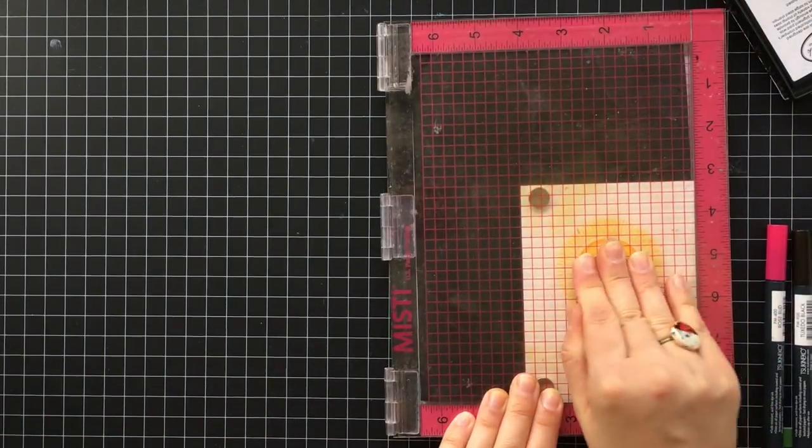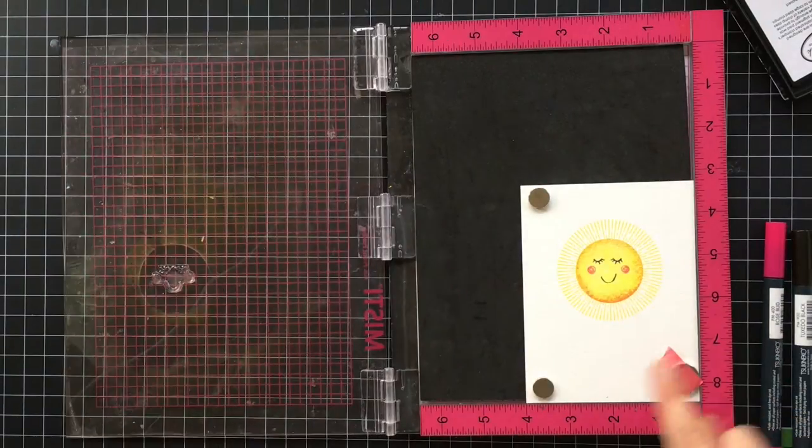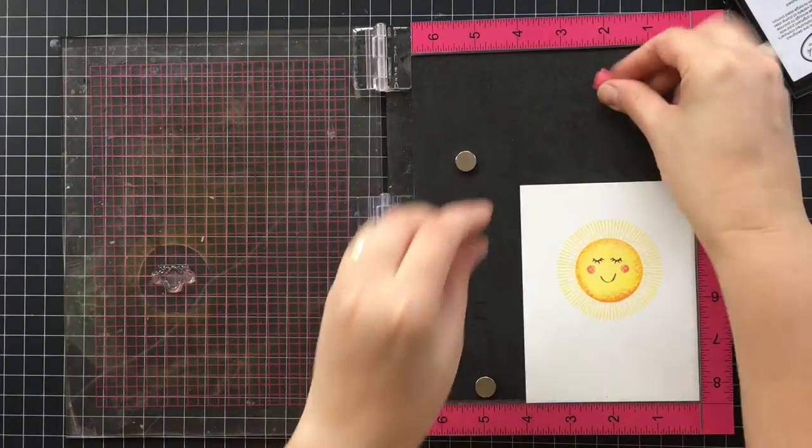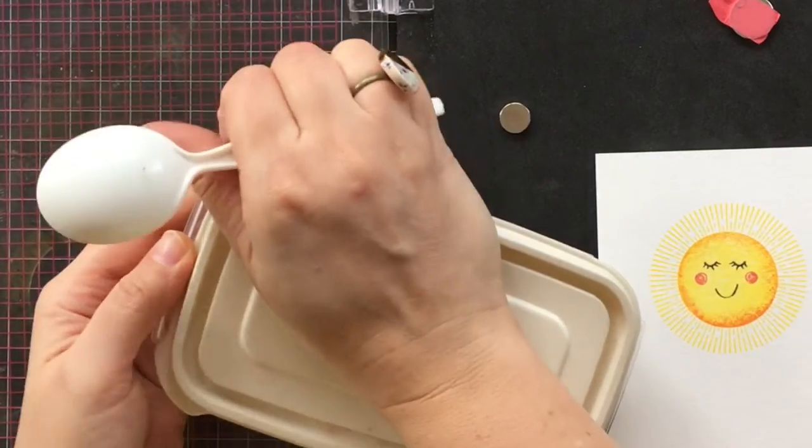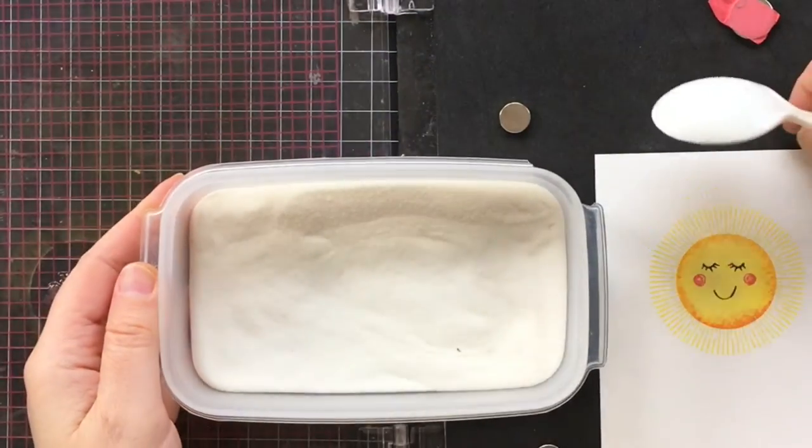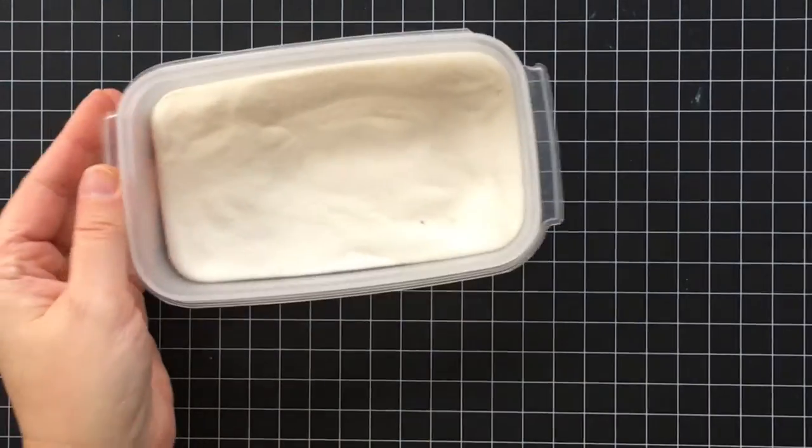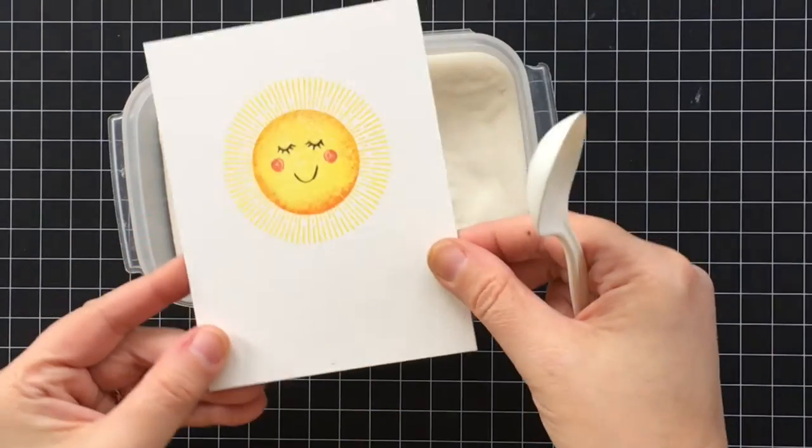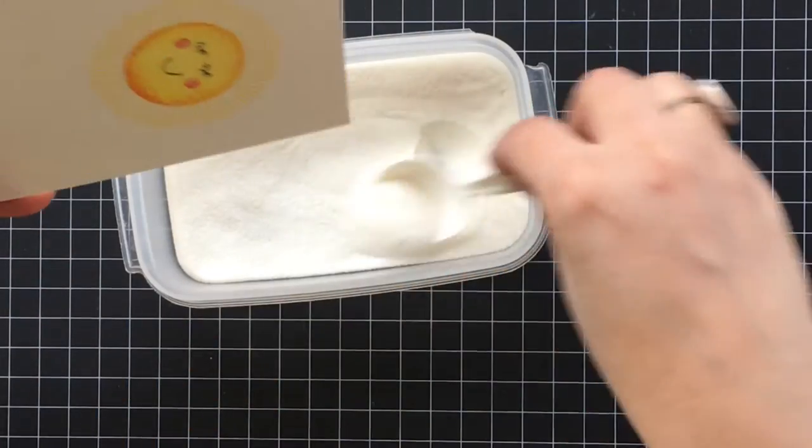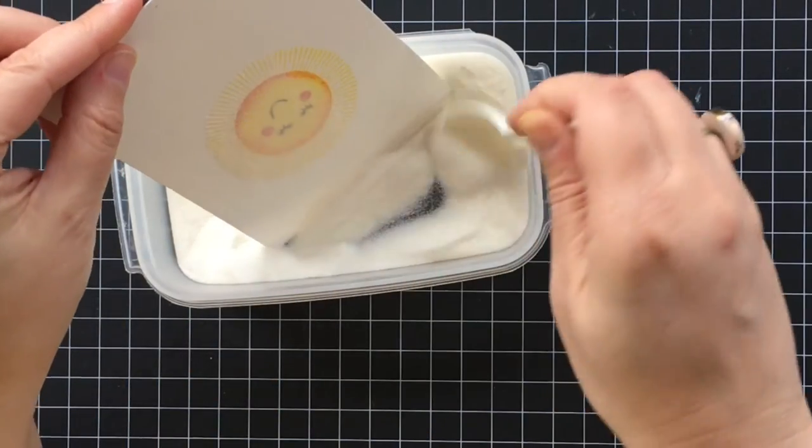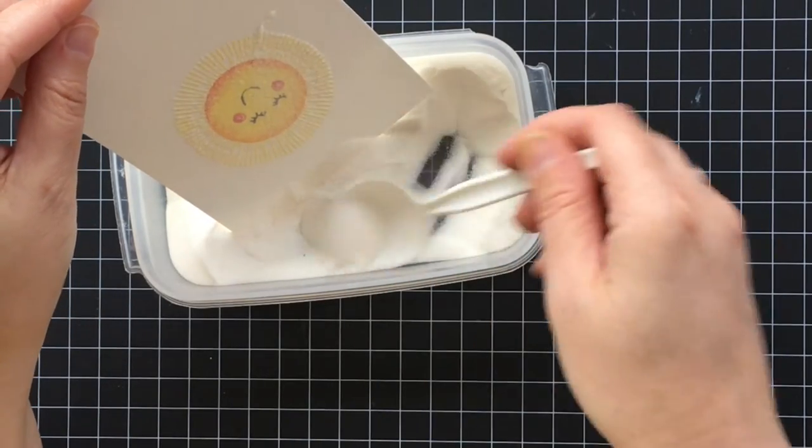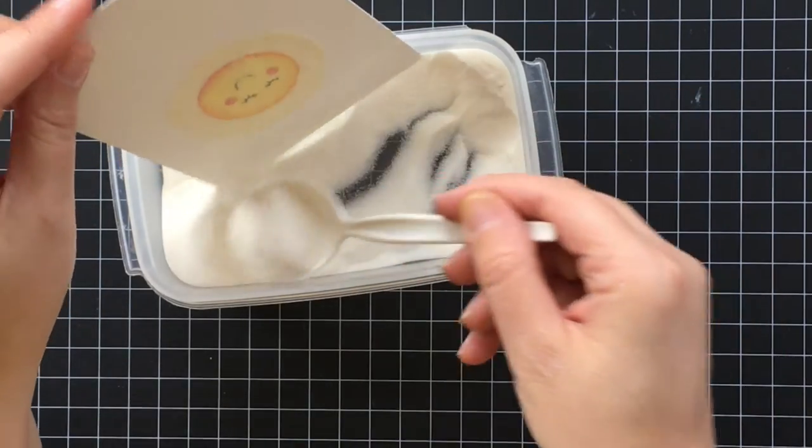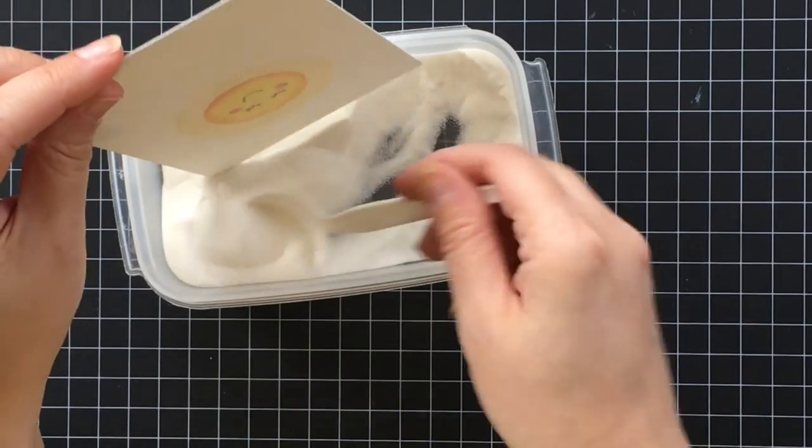Now for the really cool part of the technique, and that is embossing this whole thing. I'm going to be using clear embossing powder, but you could also use a sparkle clear embossing powder. The great thing is that pigment ink is juicy enough that the marker will still get embossed.